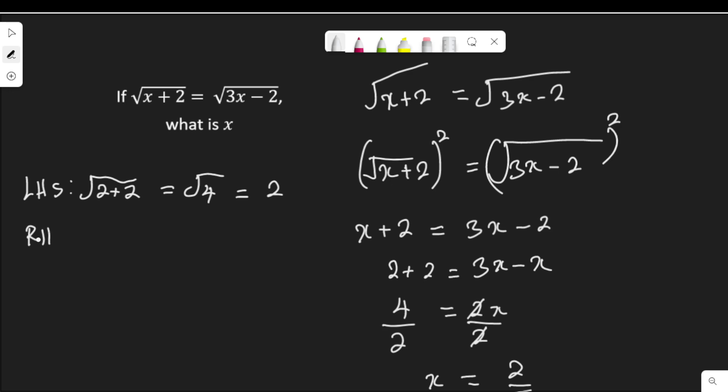Now let's check the right hand side. The right hand side is 3x minus 2. So that will be 3 times 2 minus 2, which is square root of 3 times 2 is 6. And 6 minus 2 is 4. And square root of 4 is 2.